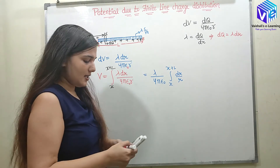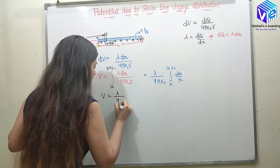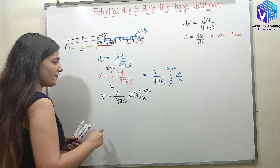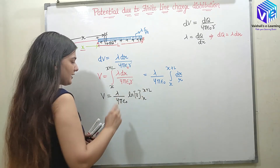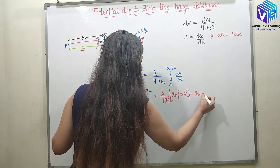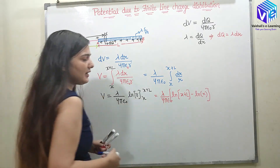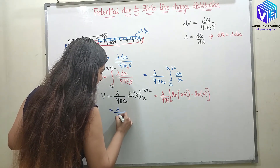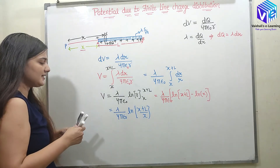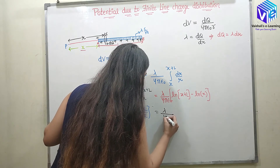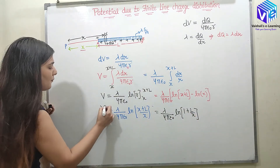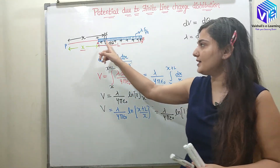I know this integration. The integration of (1/R) dR will be ln(R), with limits from X to X + L. Putting the limits: ln(A) − ln(B) = ln(A/B). So it will be lambda / (4πε₀) · ln((X + L) / X). Simplifying further, I can write it as lambda / (4πε₀) · ln(1 + L/X). This is the potential due to the finite charge distribution when my point is on the axis.